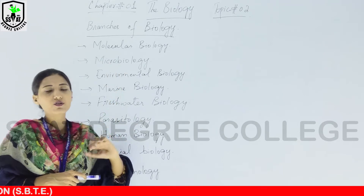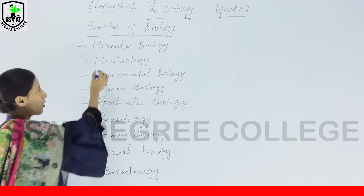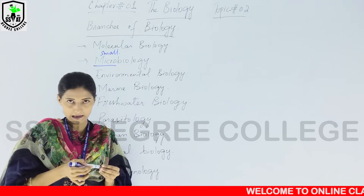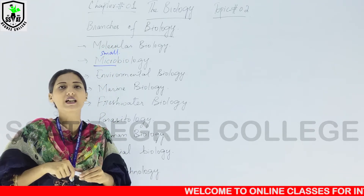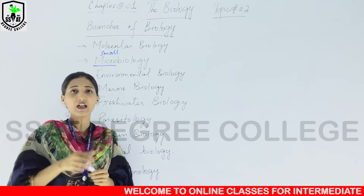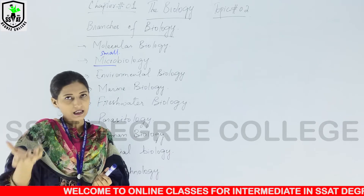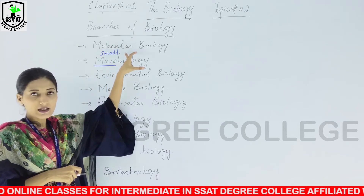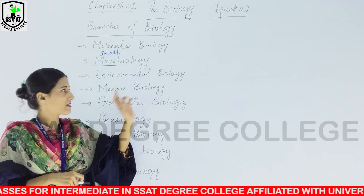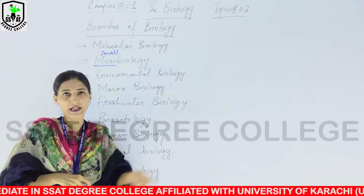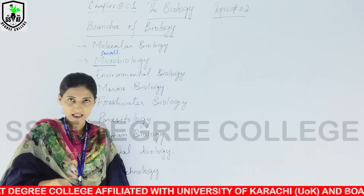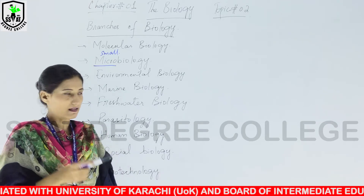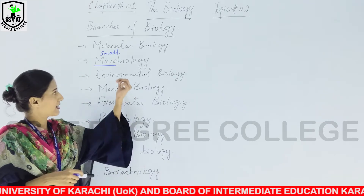The next branch is microbiology. Micro means the small one, small things — unicellular organisms that we cannot see with our naked eye and we need a microscope to see them. So all the small microorganisms are studied under the branch of microbiology. Examples of microorganisms include bacteria and viruses, which we cannot see with our naked eye and are considered microorganisms.